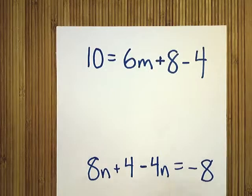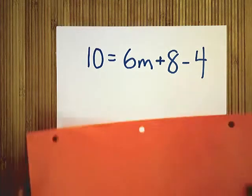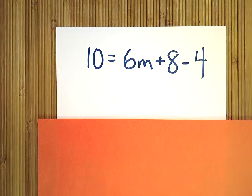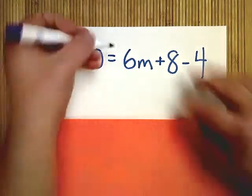So let's do a couple problems here. The first one we're going to do is 10 equals 6m plus 8 minus 4. If we're going to follow the stream of logic that we've been working with, the first step is draw the line. So we're going to draw a line down the equal sign right here.